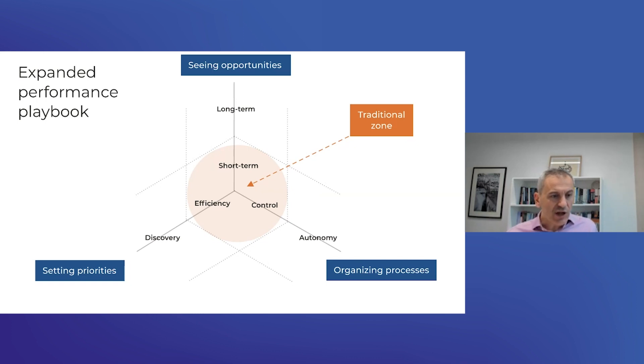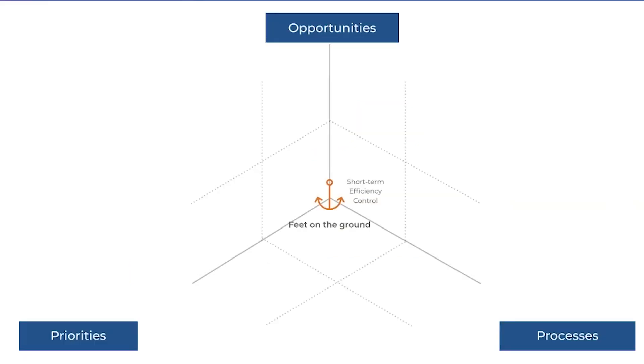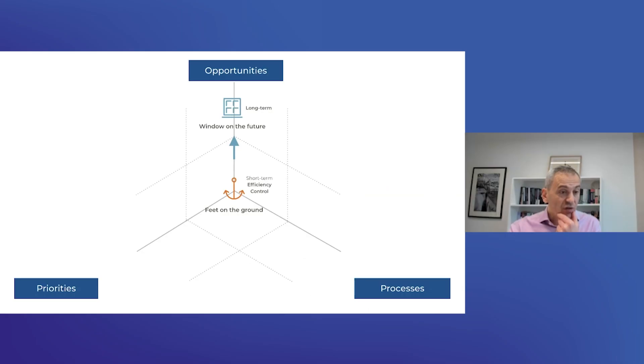Let's now think about moving in that space away from the traditional zone. The first move we could do is to maintain our sense of control and efficiency—the priorities and processes—but open up thinking and say, well, let's think about where this takes us over the long term. What would the future look like if we project things forward? We call that a window on the future.